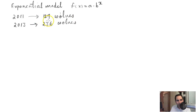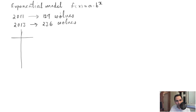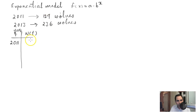What we can do is create a table, because tables always give you the opportunity to look at your data in an organized manner and understand it. So this is your t in years, and this is your n(t), the population of wolves. In 2011 you had 129 wolves, and in 2013 you had 236.